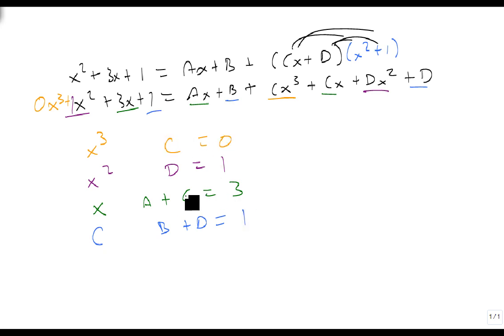So, if C is 0, then I get A plus 0 equals 3, which is A equals 3. D is 1, so B plus 1 equals 1, so B equals 0.